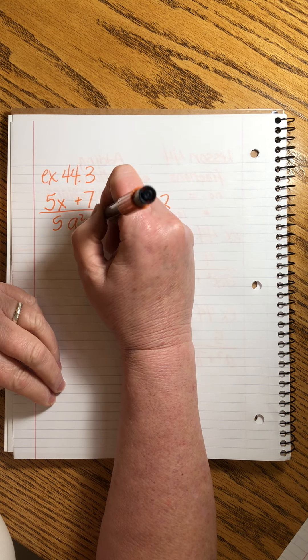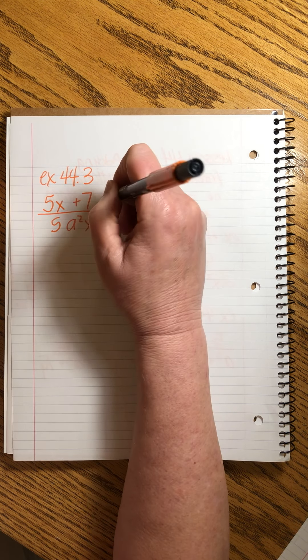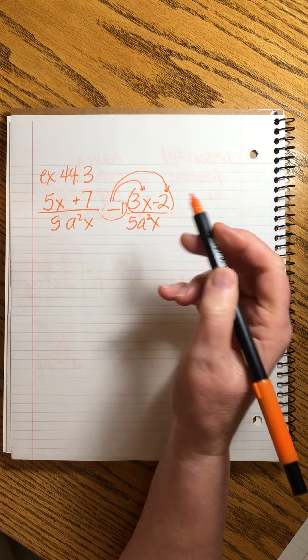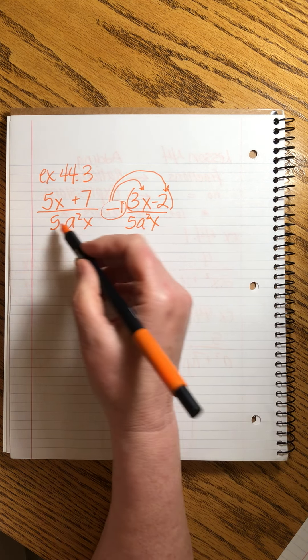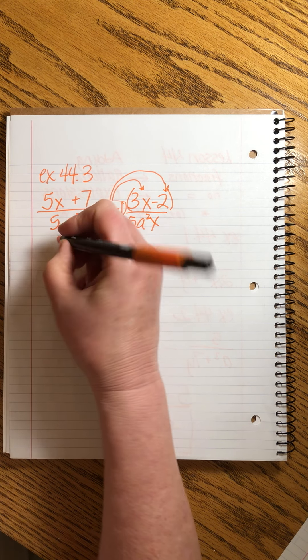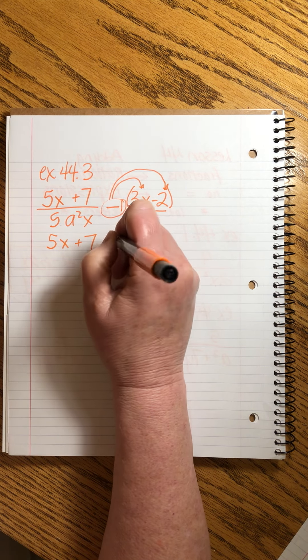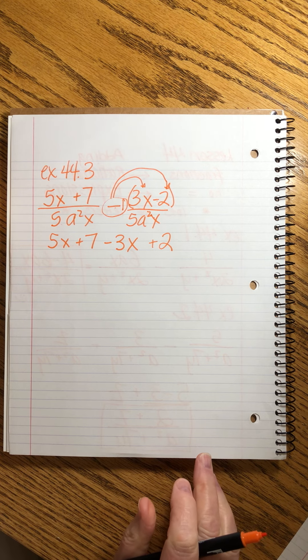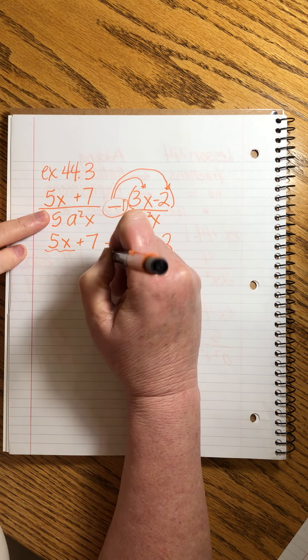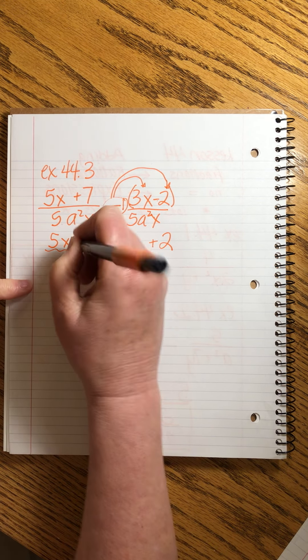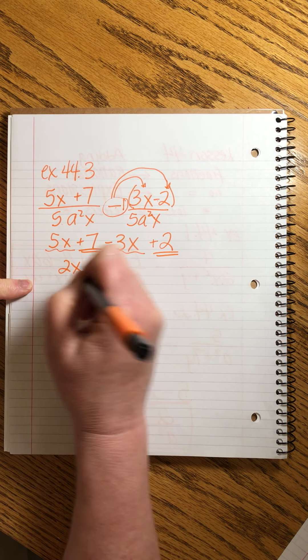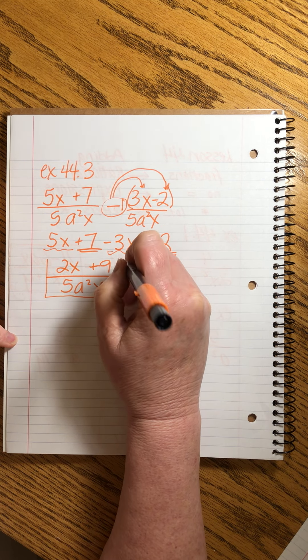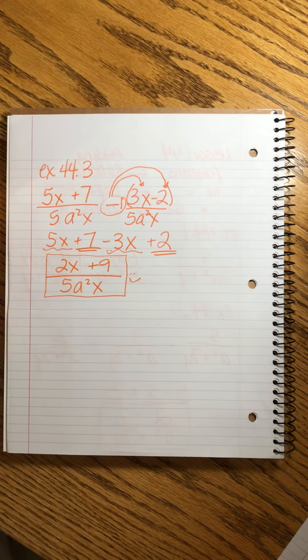Now this one's a little bit tricky because we're subtracting. And we have to remember that when we have a minus sign, we have to distribute that minus sign. It's going to change these signs. So I see the denominators match. So what I'm going to do is I'm going to write the whole numerator over again. It's going to be 5x plus 7 minus 3x. And then this minus turns that to a plus, plus 2. Now I could copy my denominator, but I know I have to combine like terms. 5x minus 3x is 2x. And then my plain numbers, that will be plus 9. Now I'll write my denominator again. 5a squared x. Yay. That's the right answer.